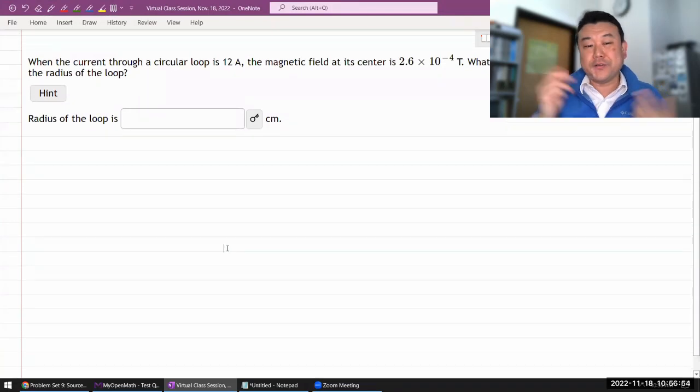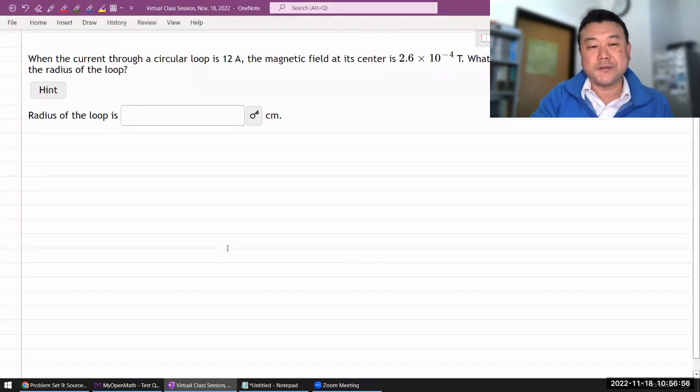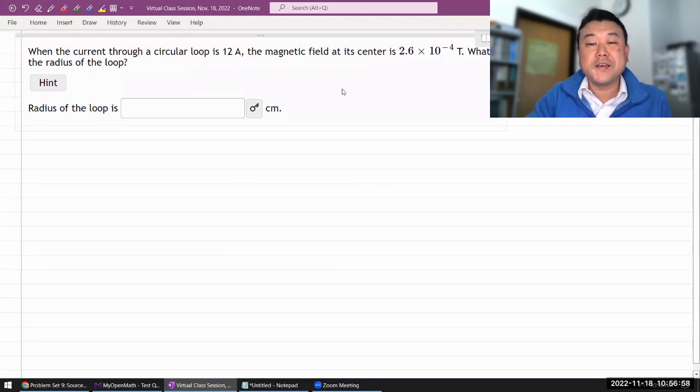So it asks, when the current through some loop is some value of current and gives you the magnetic field, what is the radius of the loop?